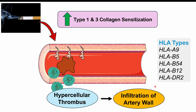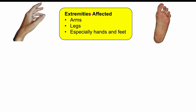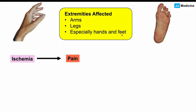Because it affects small and medium-sized blood vessels, we're going to see Buerger's disease more in the extremities — the arms and legs — and especially in the distal extremities, so the hands and the feet. Because of the thrombus that forms, we're going to get occlusion of the arteries, leading to ischemia — a blockage of blood vessels. Ischemia causes pain because the hand or foot isn't getting enough blood flow.